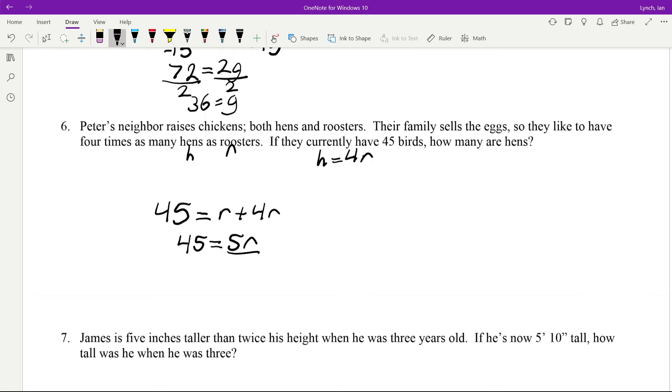Now, because they're multiplying, we have to divide. 45 divided by 5 is 9. So they have 9 roosters, which means they have 36 hens.